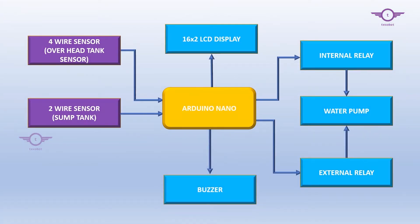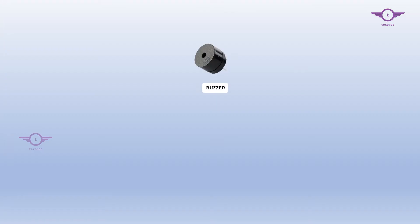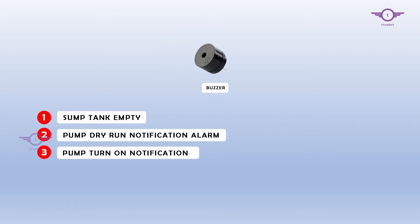The seventh block is the buzzer. This is used for notification purposes. The buzzer will notify you with different types of beep sounds on different conditions such as sump tank empty, pump dry run notification alarm, pump turn on notification, pump turned off notification, etc.